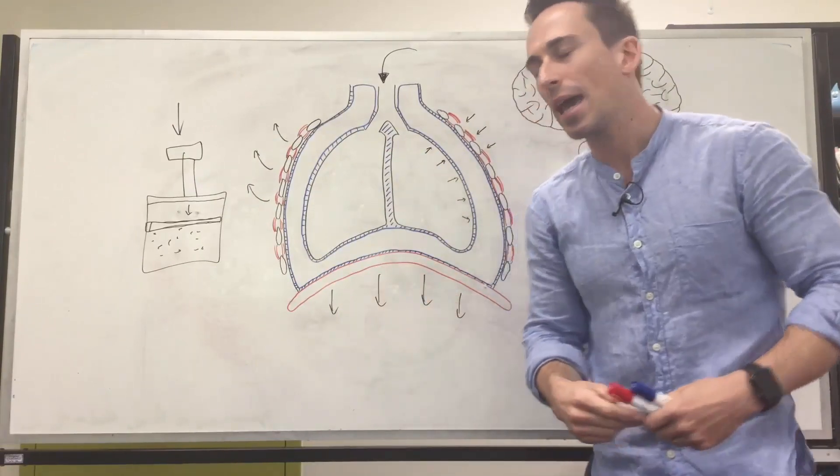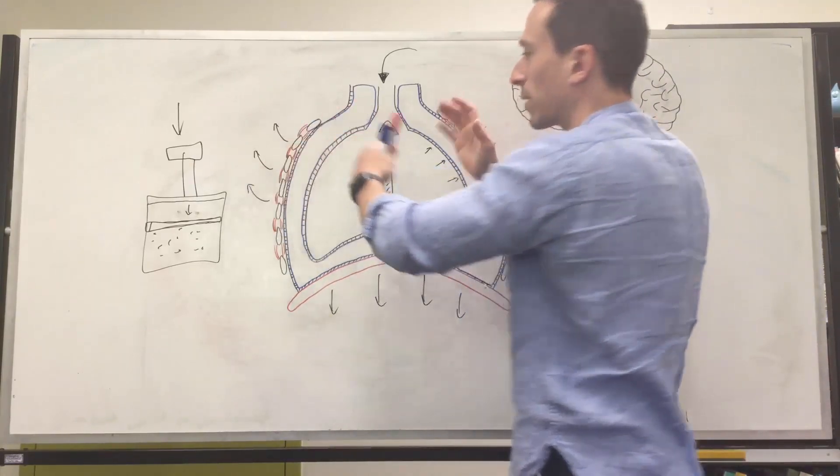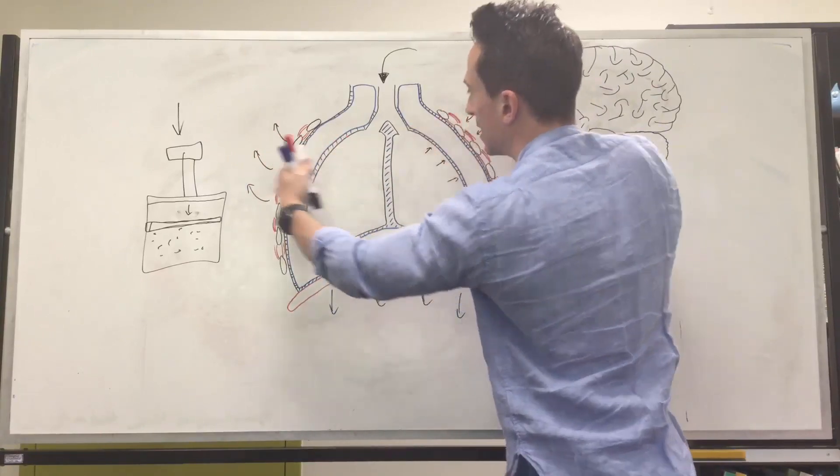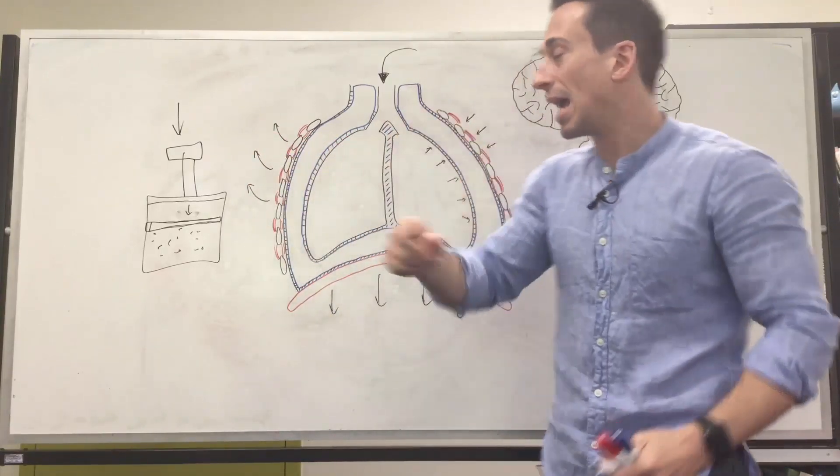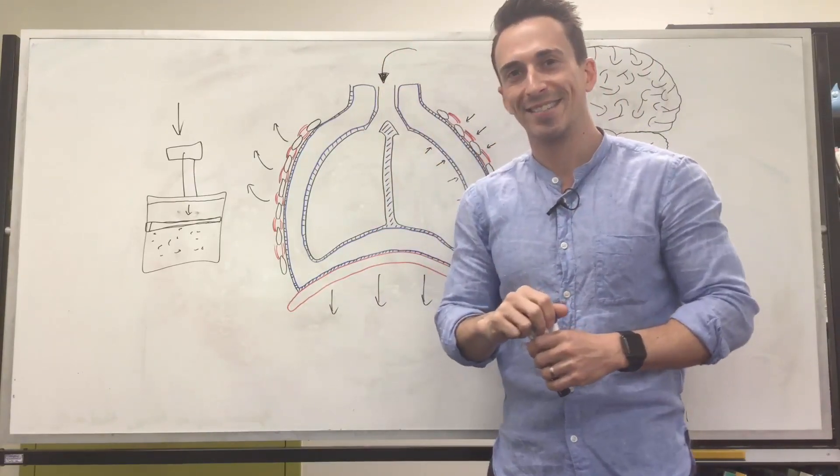How do we get that air back out? Well, simply, we relax the diaphragm and we relax the rib cage and that brings the volume back down again, decreases the volume of the lungs and the air then gets pushed back out. This is simple breathing mechanics.